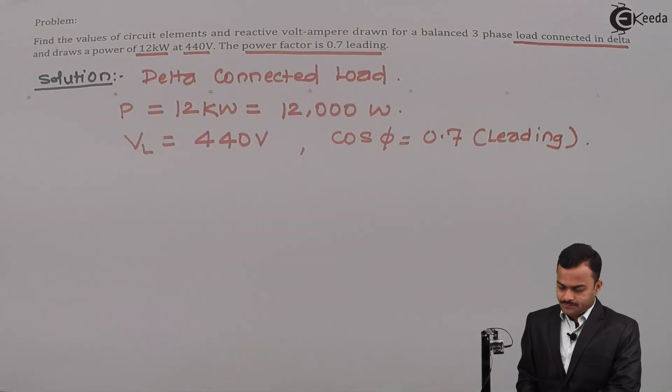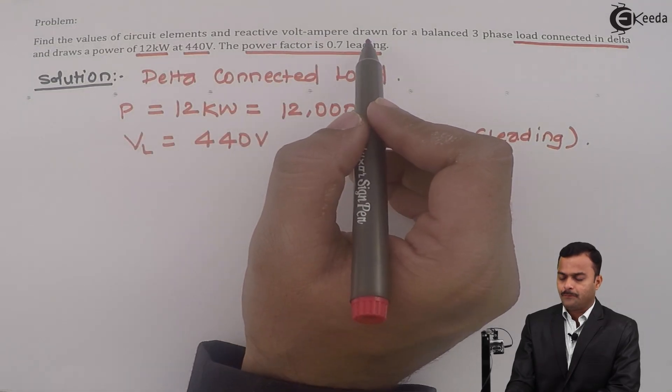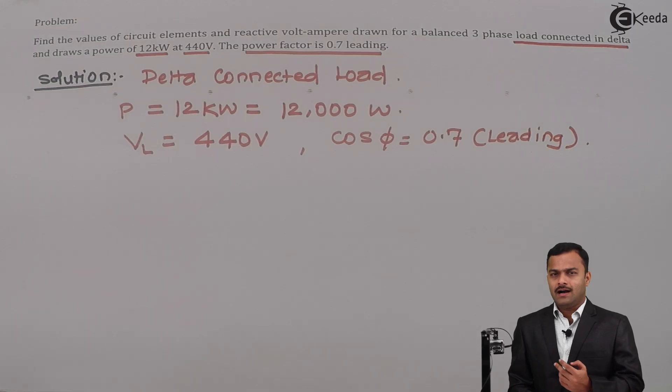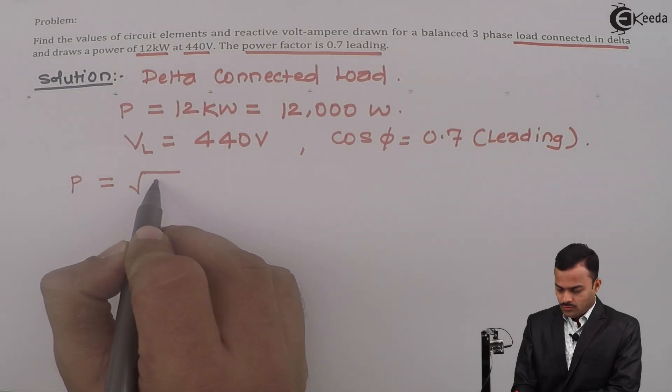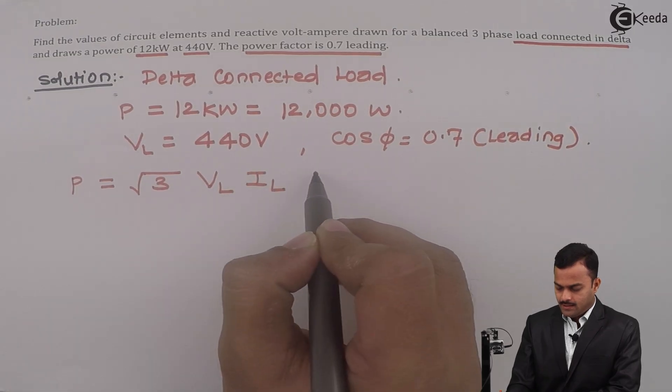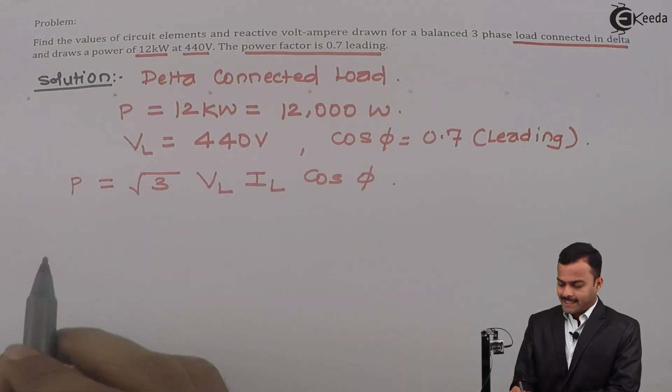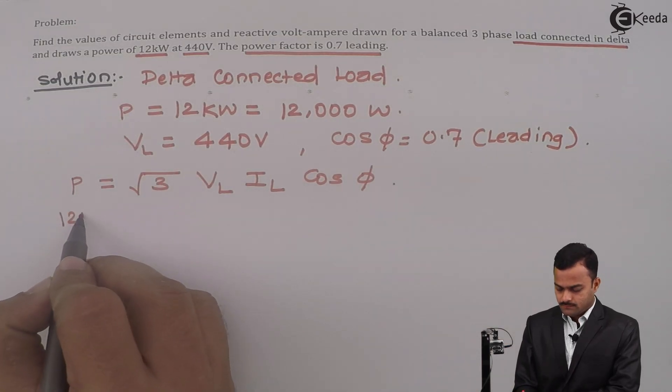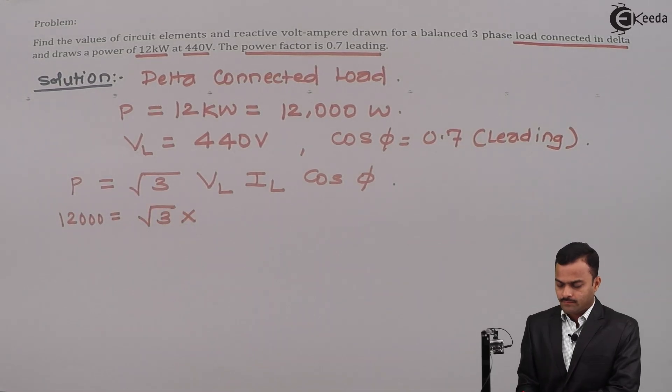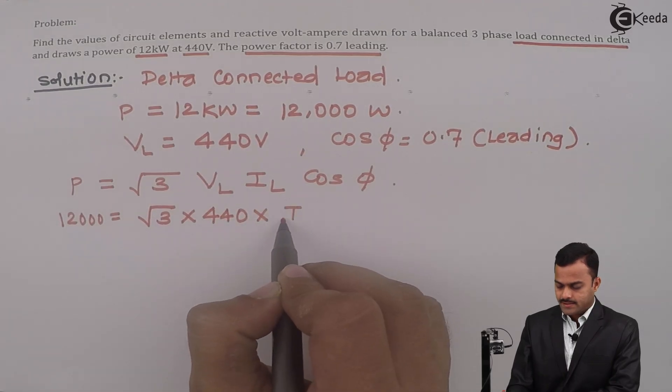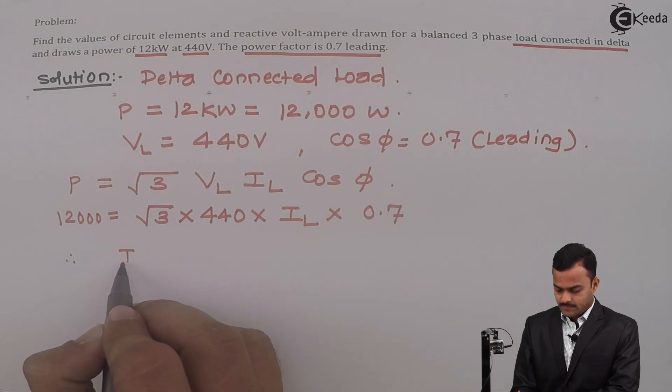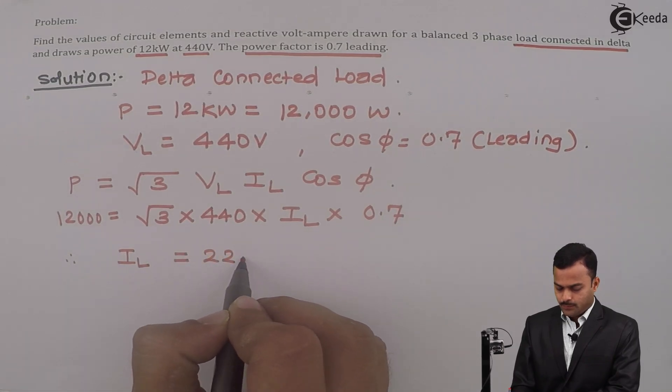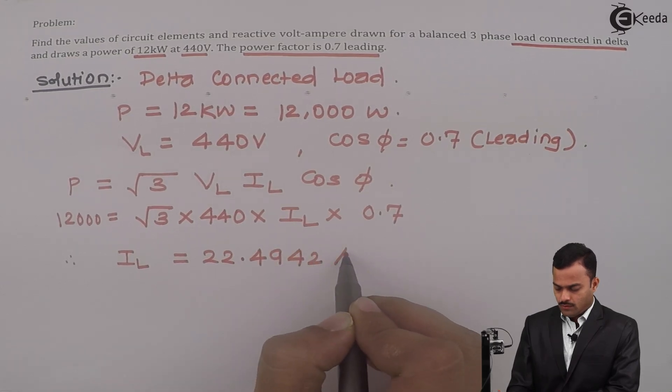We are supposed to calculate values of circuit elements and reactive volt-ampere. Circuit elements means it could be R, L, or C. So power P can be considered as root 3 VL IL cos phi. In this expression, P is known as 12,000, VL is also known as 440, IL is unknown, and cos phi is 0.7. If I solve this, I will get line current IL equal to 22.4942 amperes.